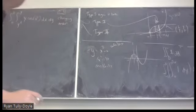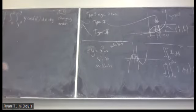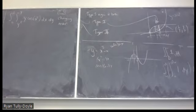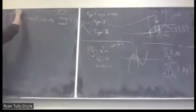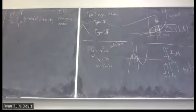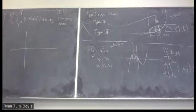The inner bounds are y² to 4 — that was bad handwriting for 4, not 4/4. So what is the region we're looking at here? The values y² and 4 are x values, attached to a dx integral.